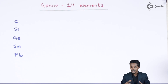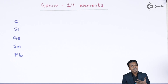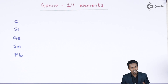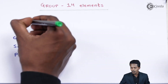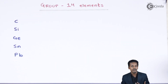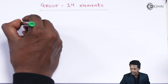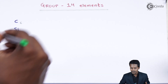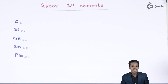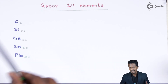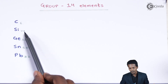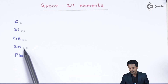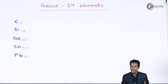Now let us talk about the general electronic configuration. But before that, we should understand the atomic numbers of these elements. The atomic number of carbon is 6, silicon is 14, germanium is 32, tin is 50, and lead is 82.